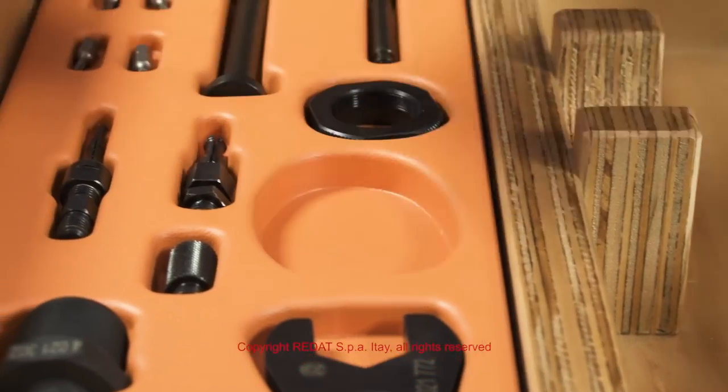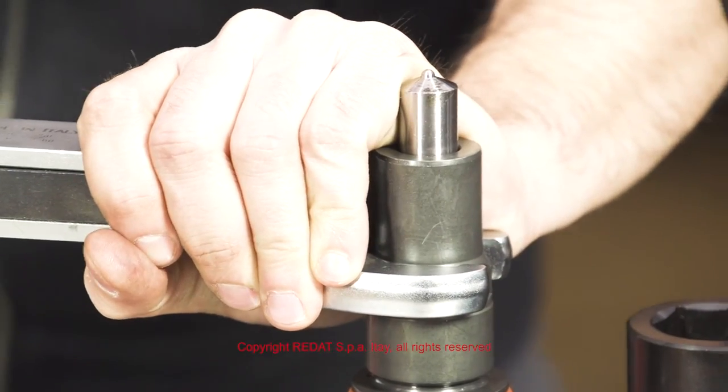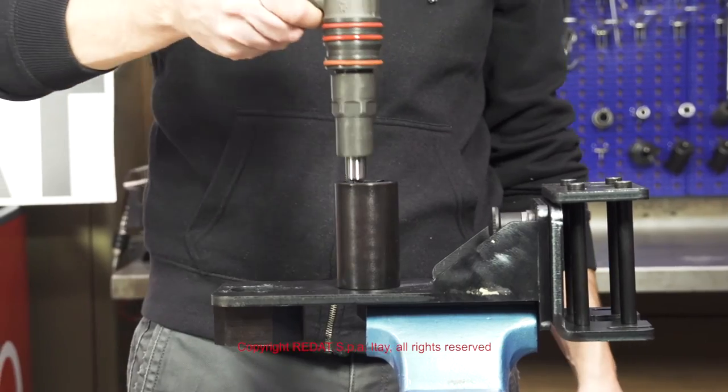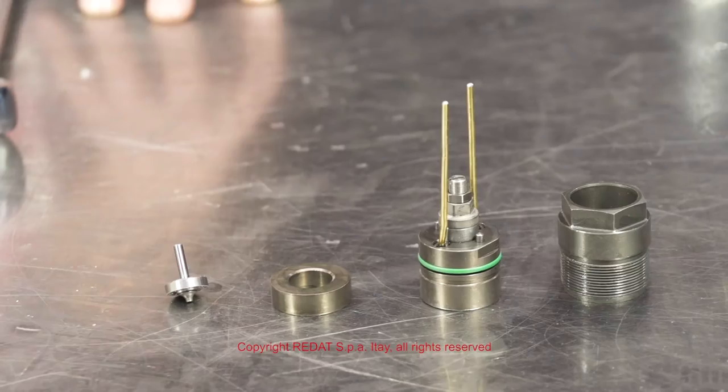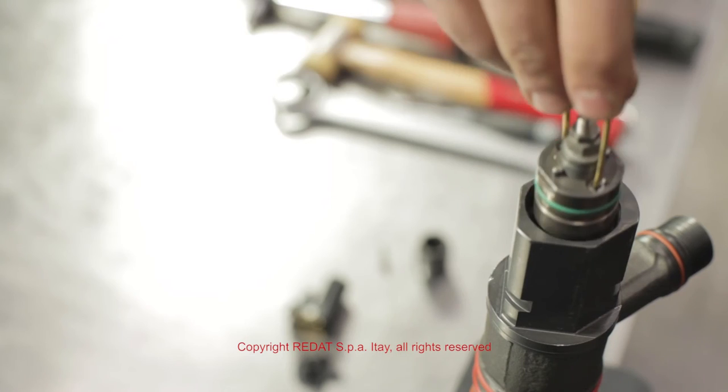Finally, we tighten the nozzle nut using the 4021185 wrench. We place the injector in the other station and proceed by assembling the other parts in the solenoid area.